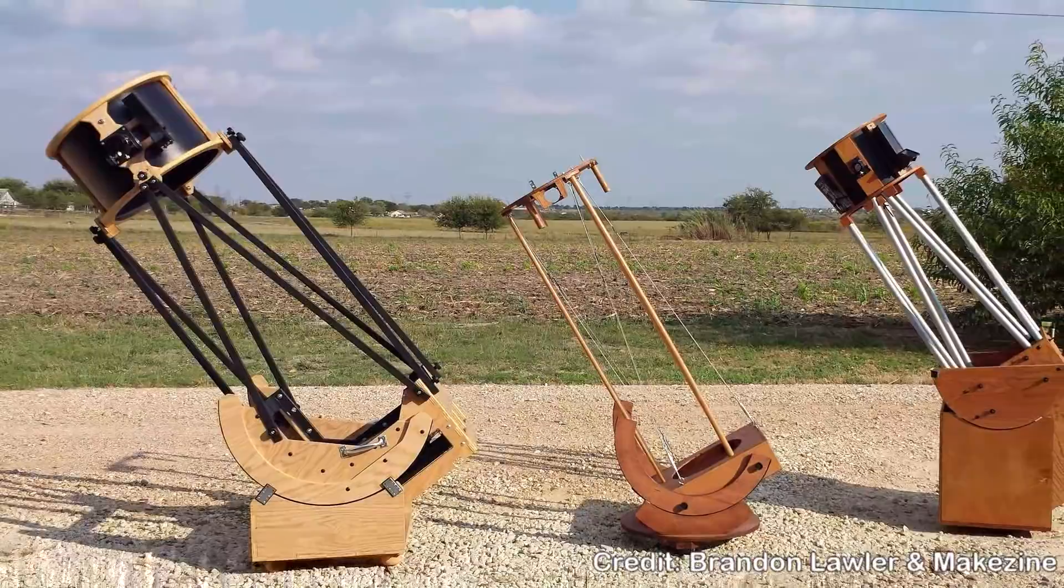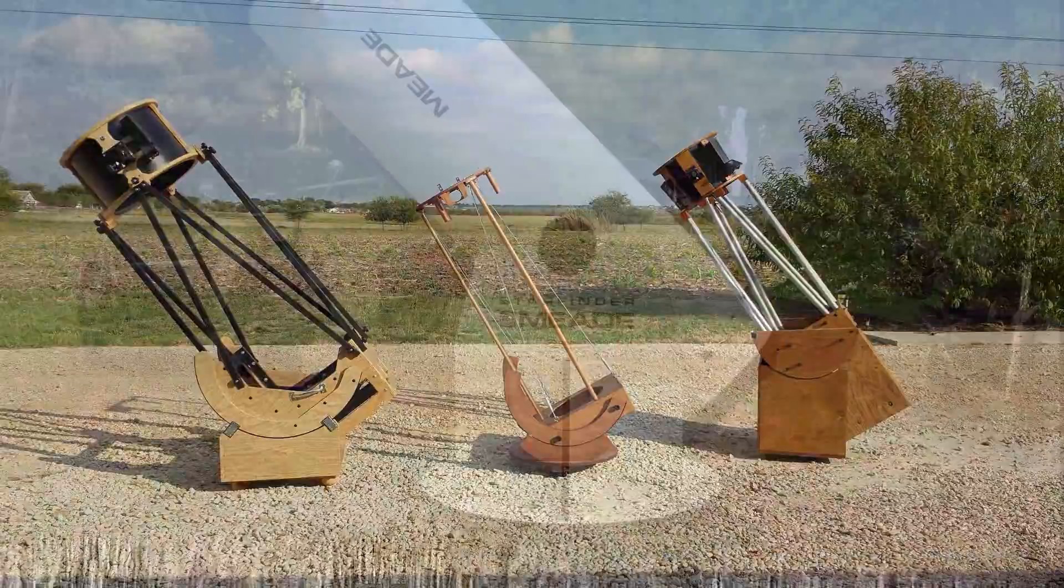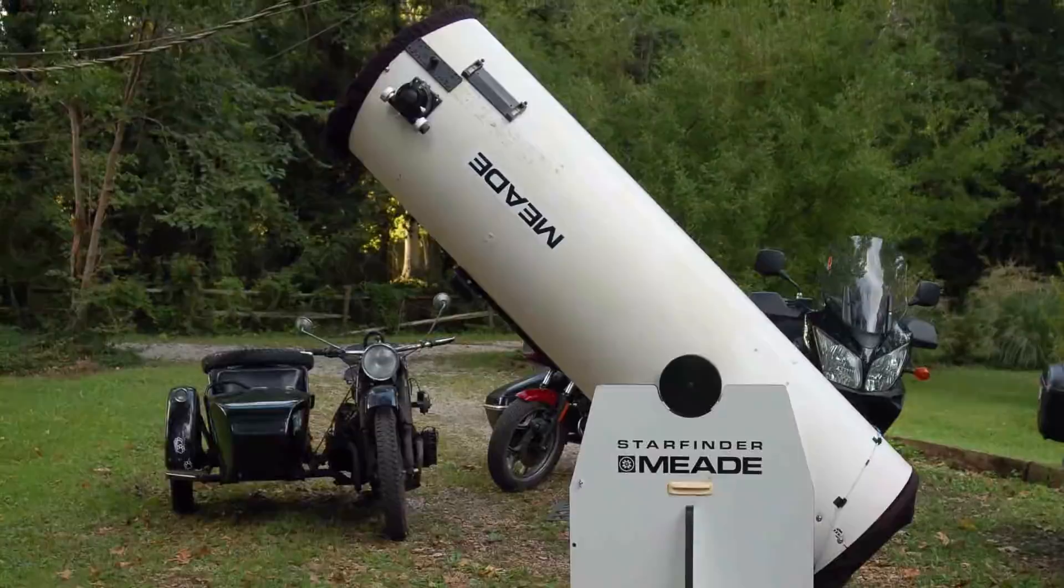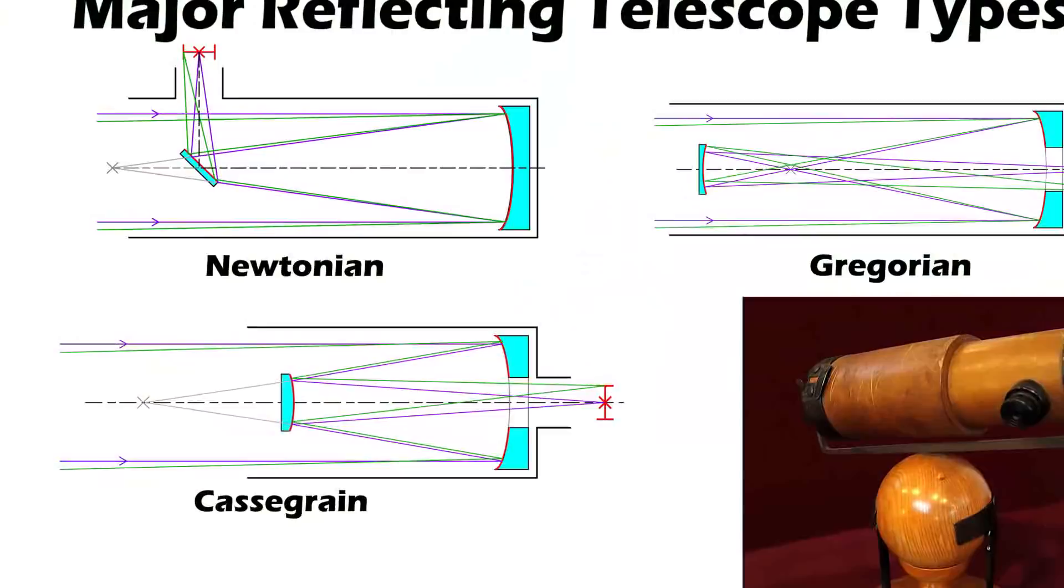Another invention of the 1600s was Cassegrain's design that also had a mirror at the back, a parabolic one but with a hole in it. The mirror reflects the light coming down the tube back up to a hyperbolic mirror that shoots it back down through a hole in the middle of the rear parabolic mirror and into an eyepiece. Remember that parabola though because it will be important in a minute.